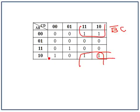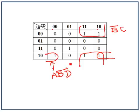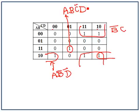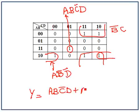Now let's create another group. That gives us A is 1, B is 0, and D does not change — D is 0 in both cases. And what's left is a single cell that can't be grouped with anyone, so that becomes A=1, B=1, C=0, D=1. The full expression for output Y is A·B·D or A·B̄·D̄ or B̄·C.